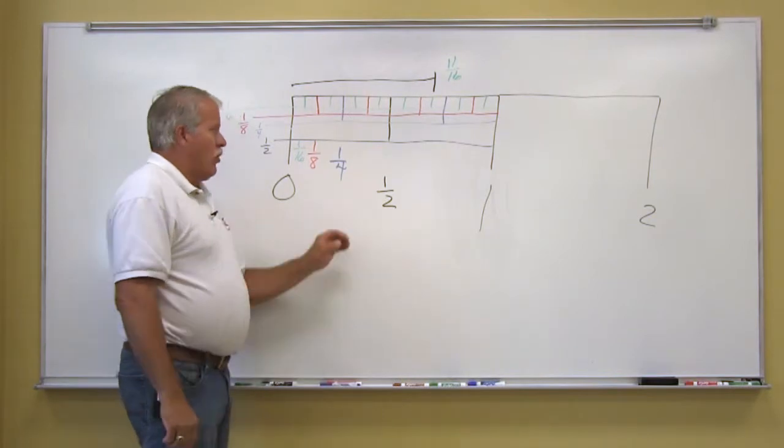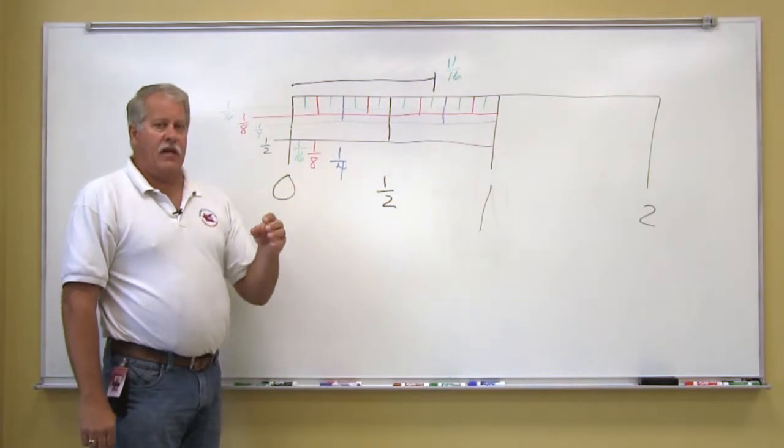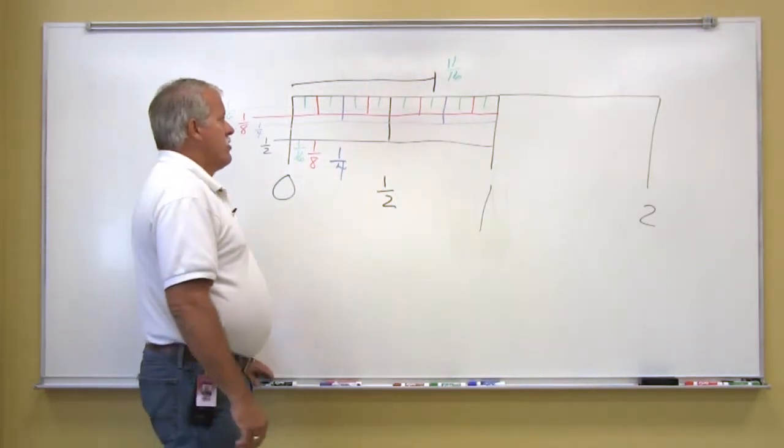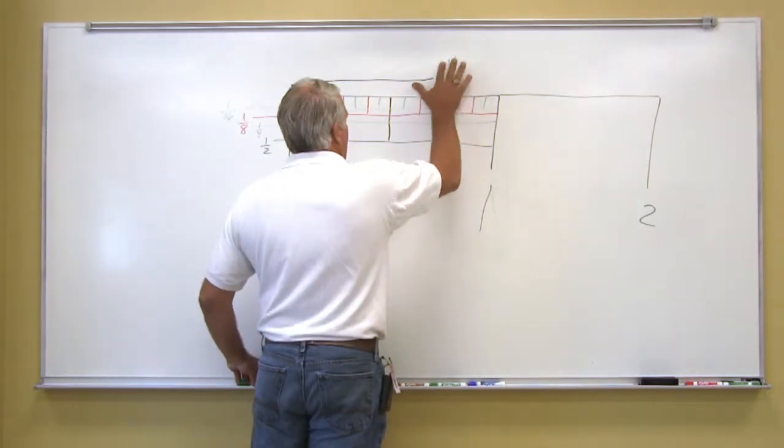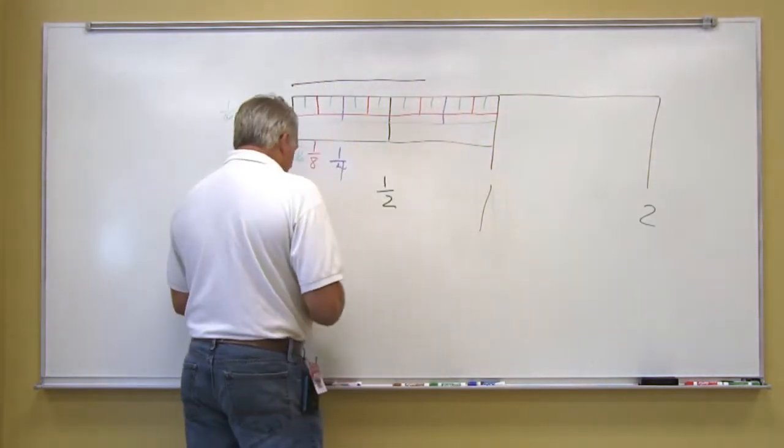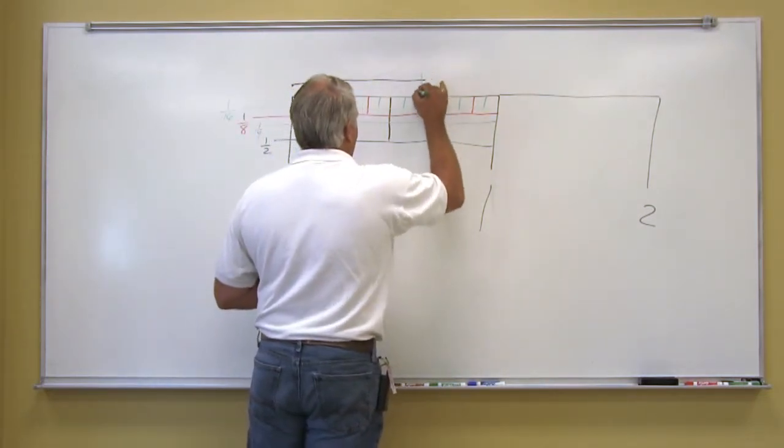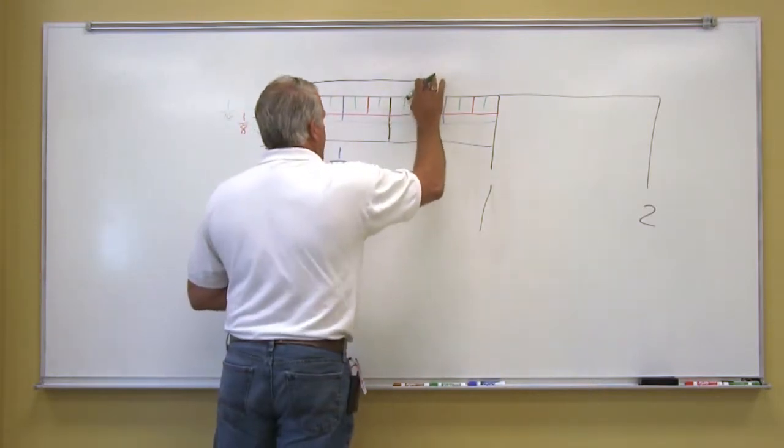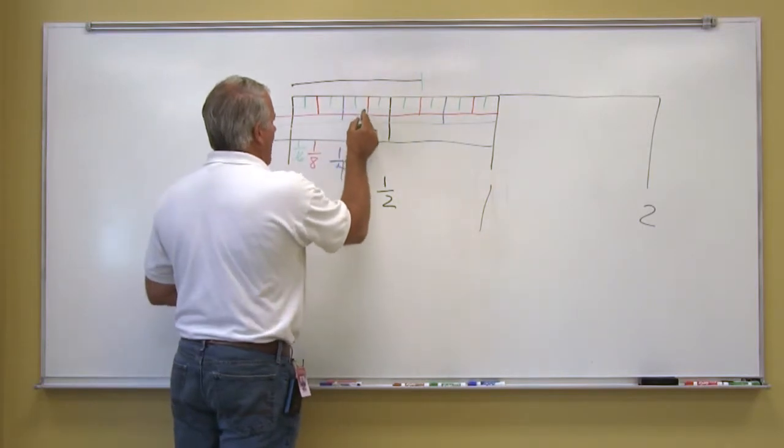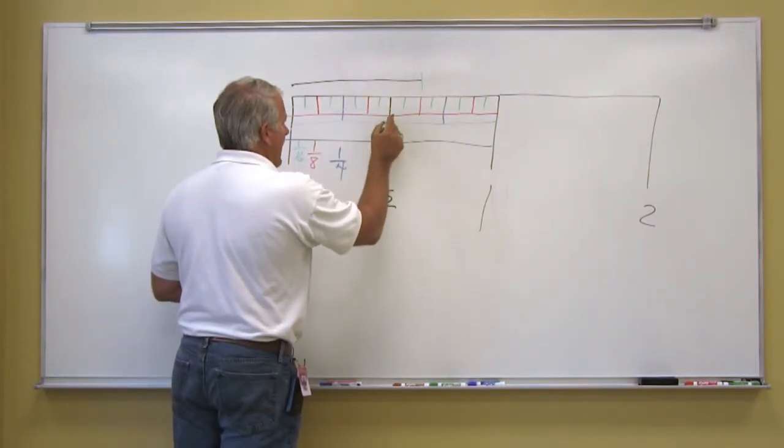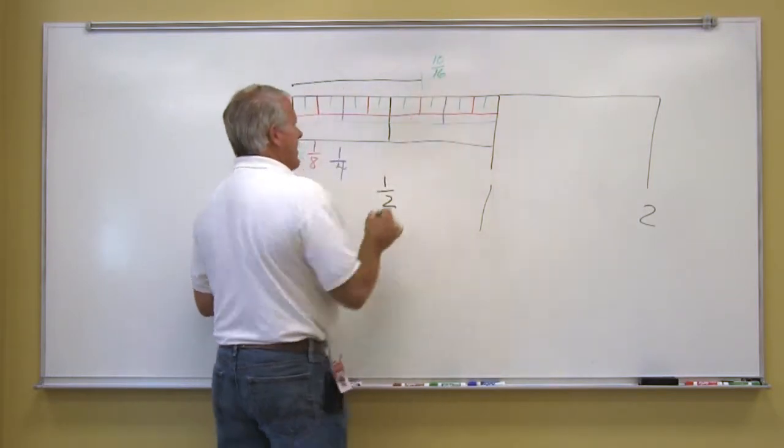Any time you count those particular marks, we always want our dimension to be in the simplest form. So if by chance we changed and this line only came to this point right here, we can still do the same thing and count each mark. One, two, three, four, five, six, seven, eight, nine, ten, which is ten sixteenths.